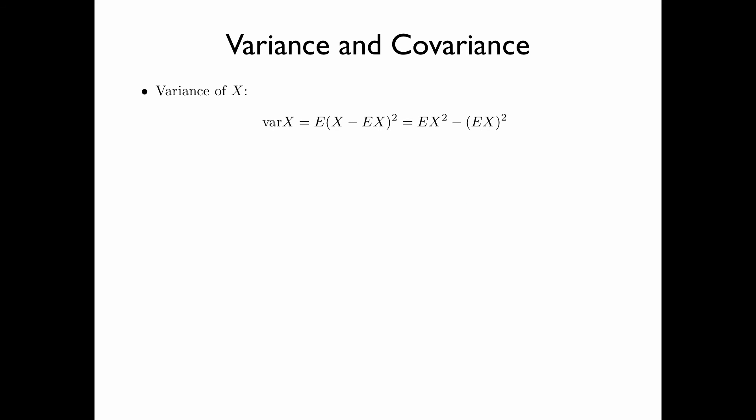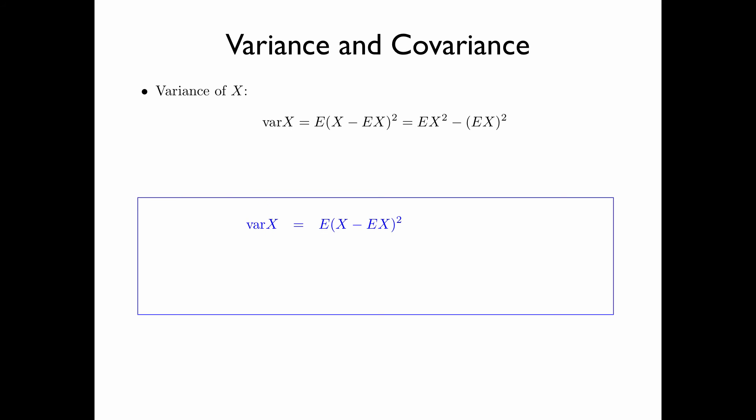For a real random variable x, the variance is defined as the expectation of the square of x minus the expectation of x, which can be shown to equal the expectation of x squared minus the square of the expectation of x. By expanding the square, we obtain x² minus 2x times E[x] plus (E[x])². By linearity of the expectation operator, this gives E[x²] minus 2(E[x])² plus (E[x])², which equals E[x²] minus (E[x])².